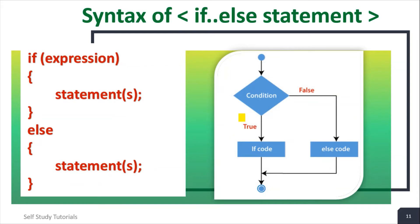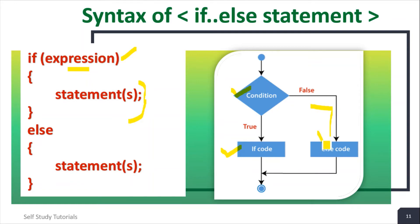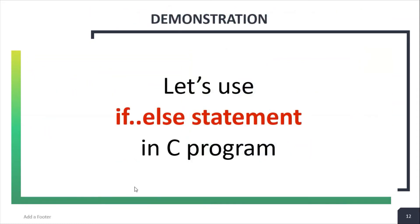Observe this flowchart. This is the condition — a boolean expression. Whenever that expression is evaluated to true, the code inside the if block executes. Whenever the boolean expression is evaluated to false, the code inside the else part executes. Let's now use the if-else statement in a C program.